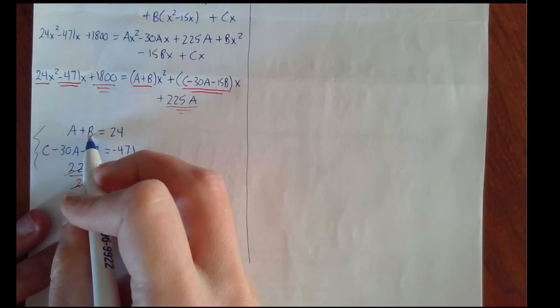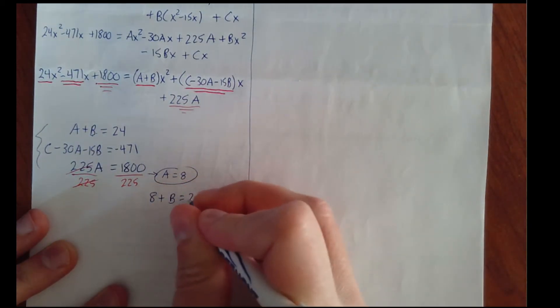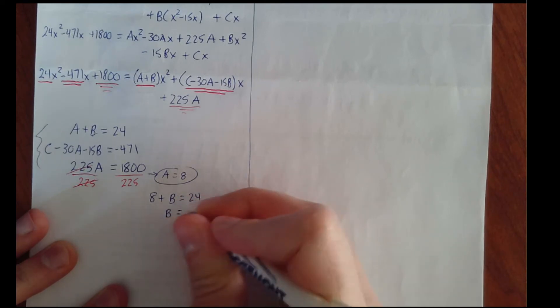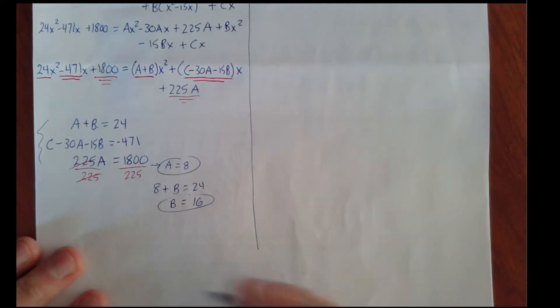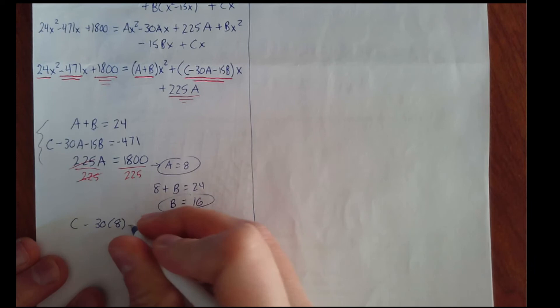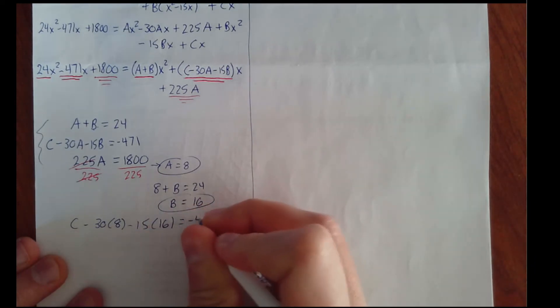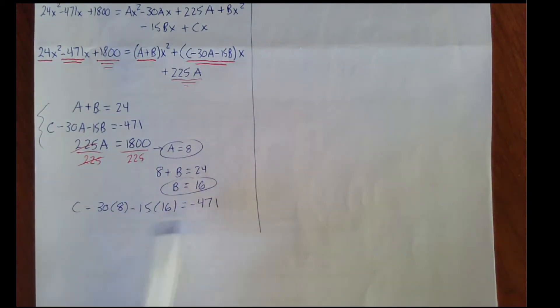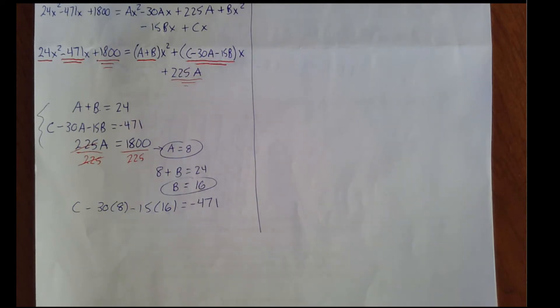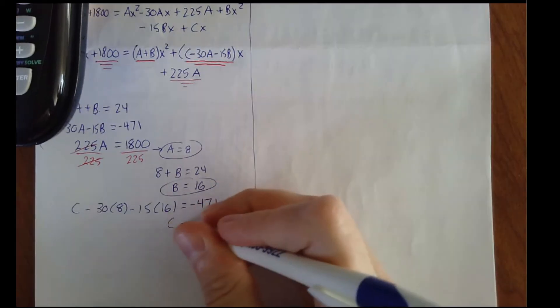Plugging a equals 8 back into the first equation: 8 plus b equals 24, so b equals 16. Then plugging both back into the second equation: c minus 30 times 8 minus 15 times 16 equals negative 471. Solving: negative 471 plus 240 plus 240 gives c equals 9.